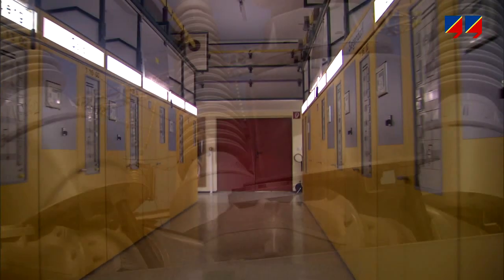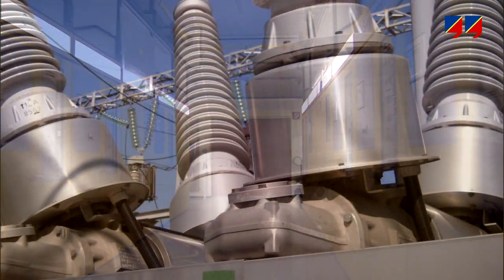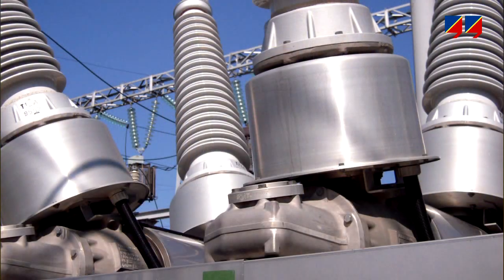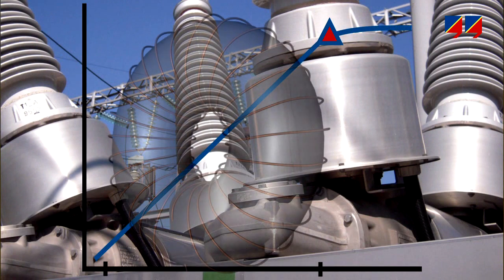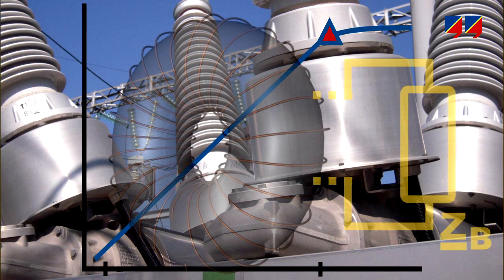Important parameters of a protection CT are its ratio, its excitation curve, the knee point, its winding resistance, and the burden.